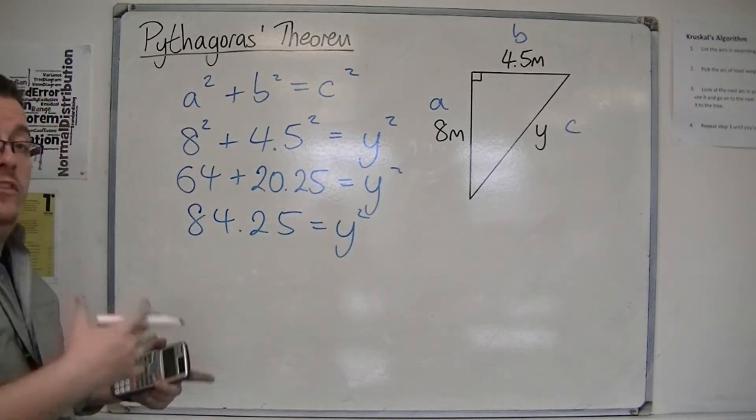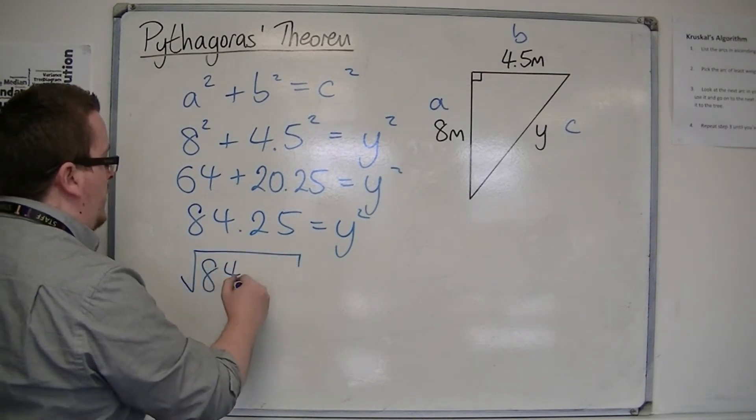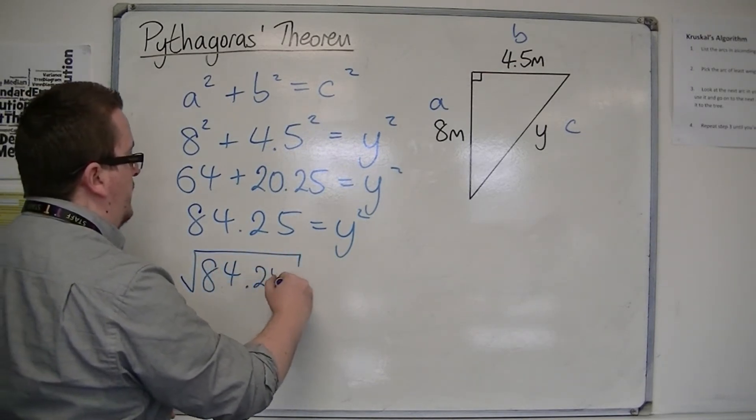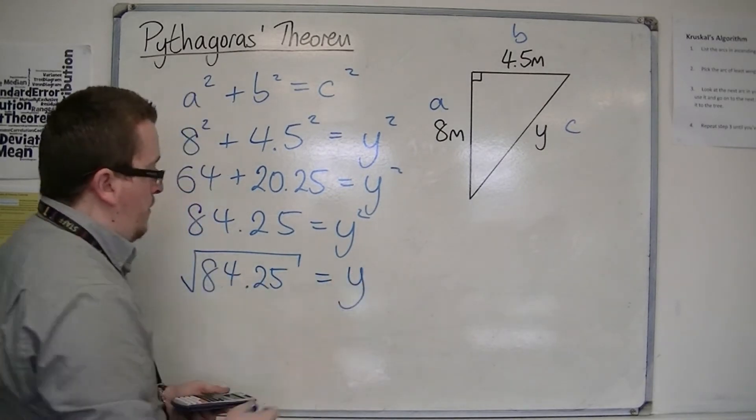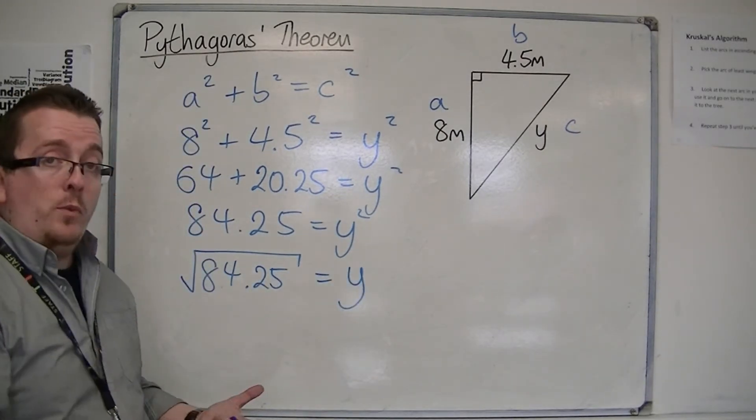Then we square root both sides. So we need to find the square root of 84.25. That's not one you would be expected to know, so use the square root button on your calculator.